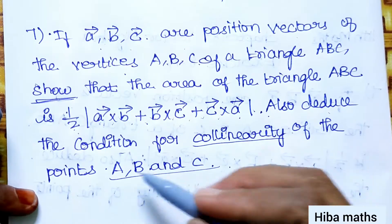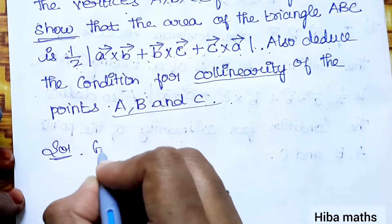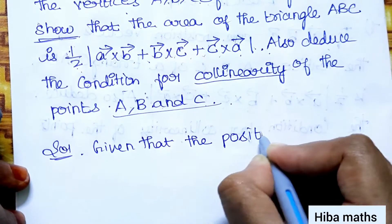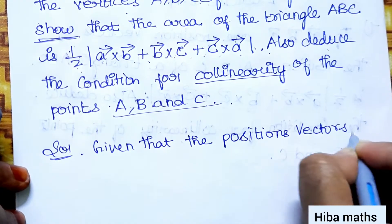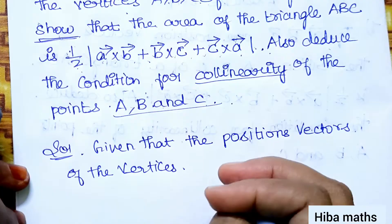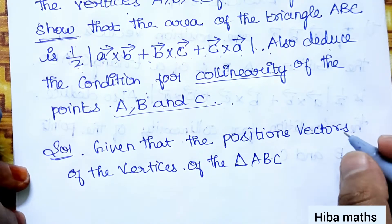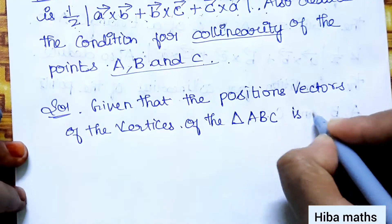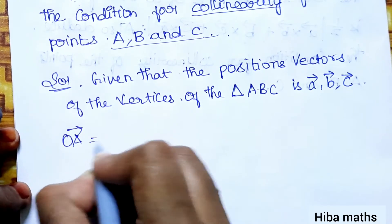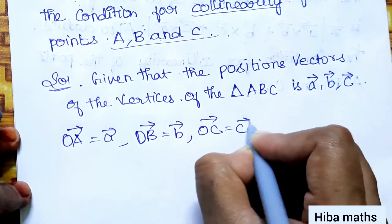First, we will prove this. Given that the position vectors of the vertices of triangle ABC are: OA vector = A vector, OB vector = B vector, OC vector = C vector.